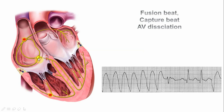With regards to the conduction system, we have the SA node — the pacemaker — which generates the cardiac impulse. That impulse travels through inter-atrial pathways to the AV node. The AV node has a refractory period and acts as a gatekeeper, controlling passage of impulses from the atria into the ventricles. From the AV node it goes to the bundle of His, then the right and left bundle branches and Purkinje fibers, producing a nice narrow QRS complex.